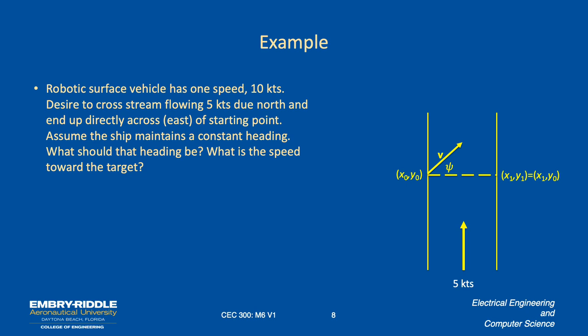We want the north-south component of the velocity to be zero. The north-south component of the velocity with a heading psi is going to be 10 times the sine of psi, and then we want to add that to the 5 knots due north and we want to get nothing. That means that the sine of psi has to be minus a half, which means that psi is minus 30 degrees, meaning we're pointing towards the velocity. That's correct - it is minus 30 degrees.